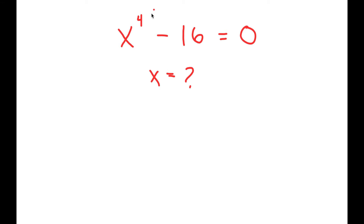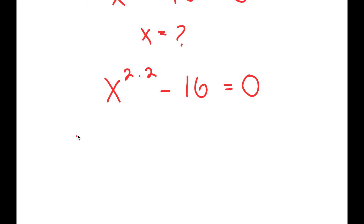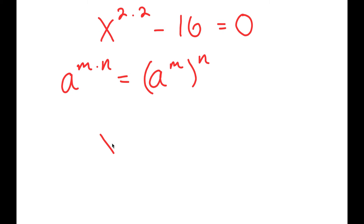To start, I'm going to rewrite this as x to the power of 2 times 2, minus 16, is equal to 0. If I have something in the form a to the power of m times n, this is equal to a to the power of m, to the power of n. So x to the power of 2 times 2 is equal to x squared, to the power of 2. And 16 I can rewrite as 4 to the power of 2.